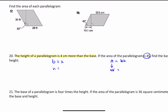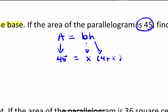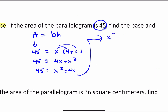The height is 4 centimeters more than the base, so it's 4 plus X. I can replace B with X and H with 4 plus X. So I have X times the quantity (4 plus X). Applying the distributive property: 45 equals 4X plus X squared, which I'll rewrite as X squared plus 4X equals 45. Subtracting 45 from both sides: X squared plus 4X minus 45 equals 0.